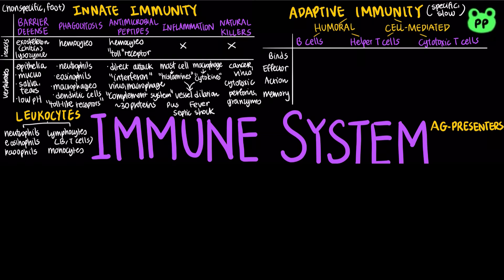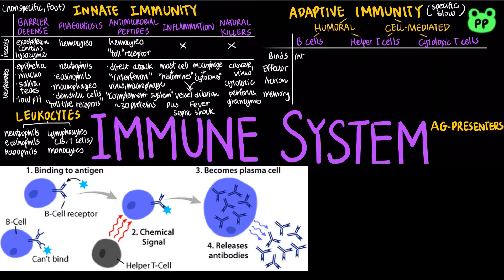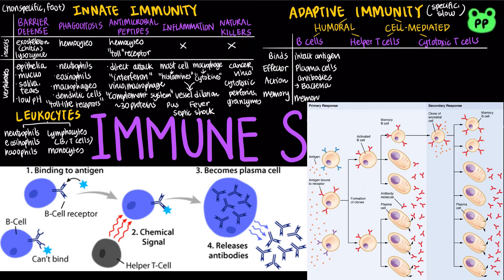B cells are lymphocytes that mature in bone marrow. The humoral response involves B cells and helper T cells. B cell receptors bind specific intact antigens, which are any foreign molecules to which a lymphocyte responds. A single B cell has about 100,000 identical antigen receptors that recognize the same specific type of molecule. B cells give rise to plasma cells, which secrete antibodies or immunoglobulins providing immunity against extracellular pathogens such as bacteria. B cells also give rise to long-lived memory B cells that can facilitate a faster and more efficient response during second exposure to the pathogen.